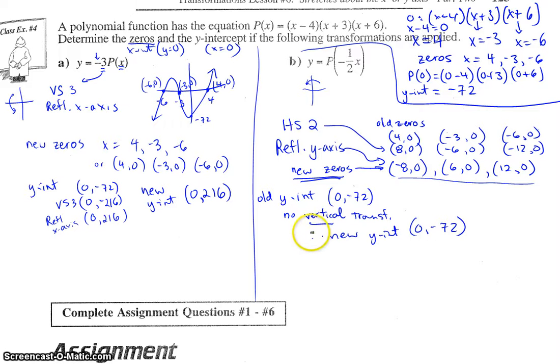Our y-intercept—there were no vertical transformations on this one. So our old y-intercept, same as our new y-intercept: (0, -72).